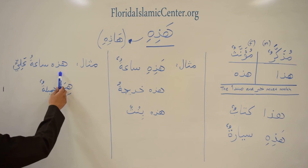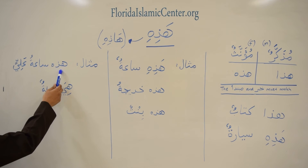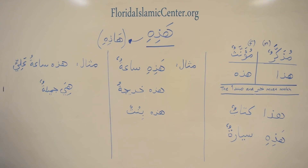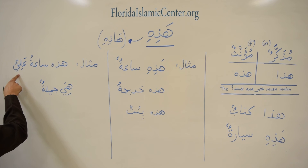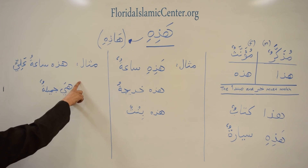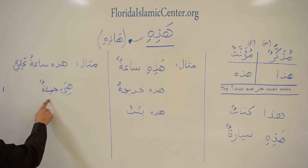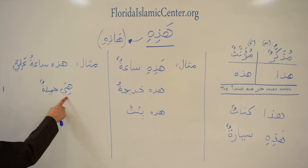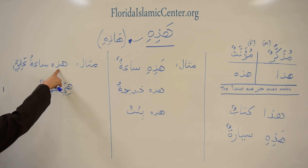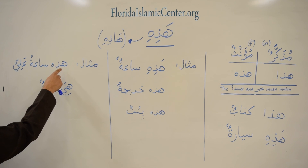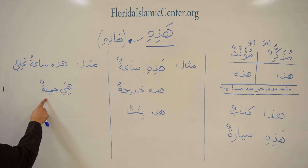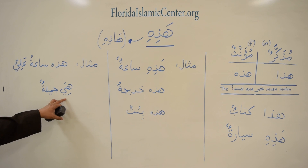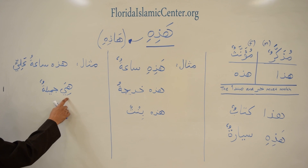Another example: 'Hadhi sa'atu Aliyin' — this is the watch of Ali. Here we have the mudhaf and the mudhaf ilayh: sa'atu Aliyin. Now if you want to continue talking about the watch and say it is beautiful, you say 'hiya jameelatun'. You must use hiya because hiya refers back to hadhi, which refers to the watch. So hadhi sa'atu Aliyin, hiya jameelatun — the mubtada and khabar are matching here.